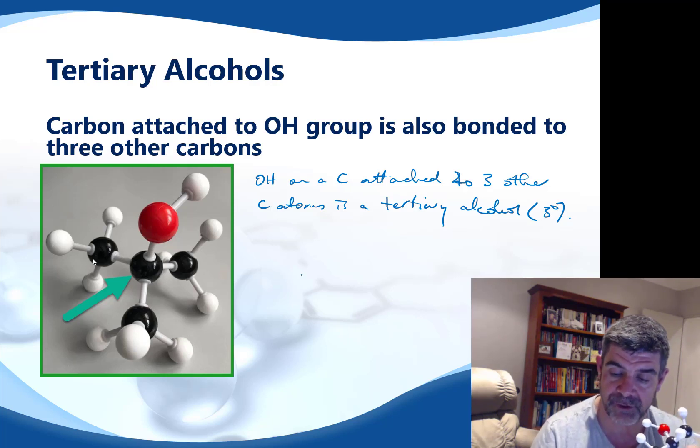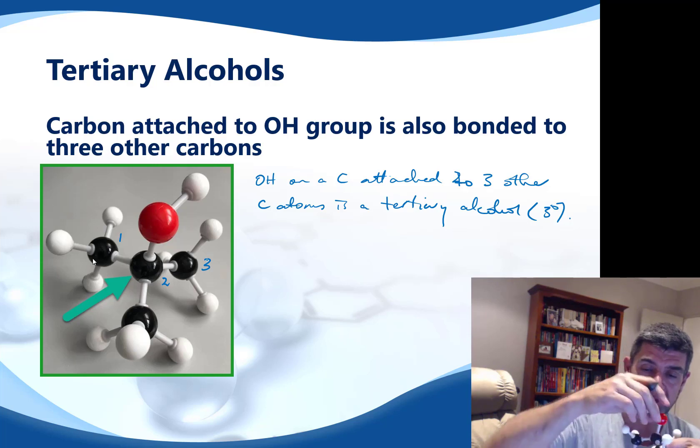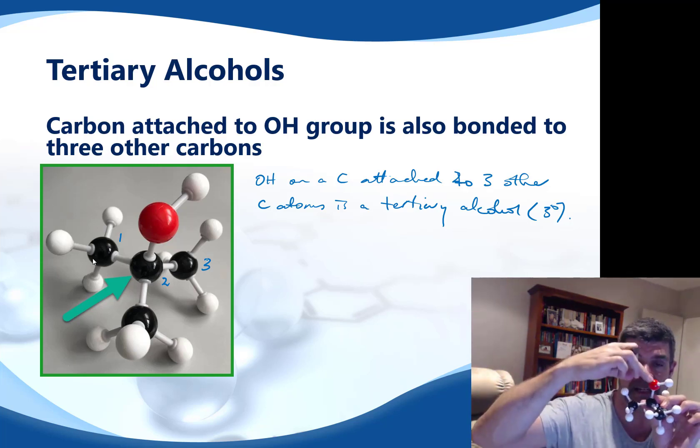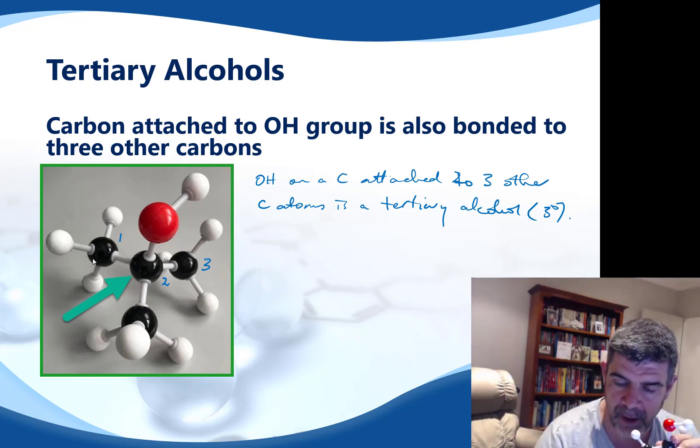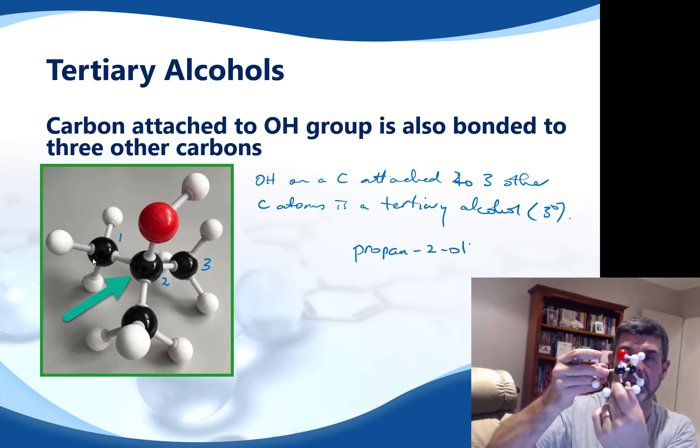So if we were to draw this one again, we've got one, two, three in the main chain, so it's still going to be propane. The OH group is on the second carbon, that's still there. So everything else from what we had before is exactly the same. So it's propan-2-ol. But now we've actually got this little side chain. The little side chain is off the main chain.